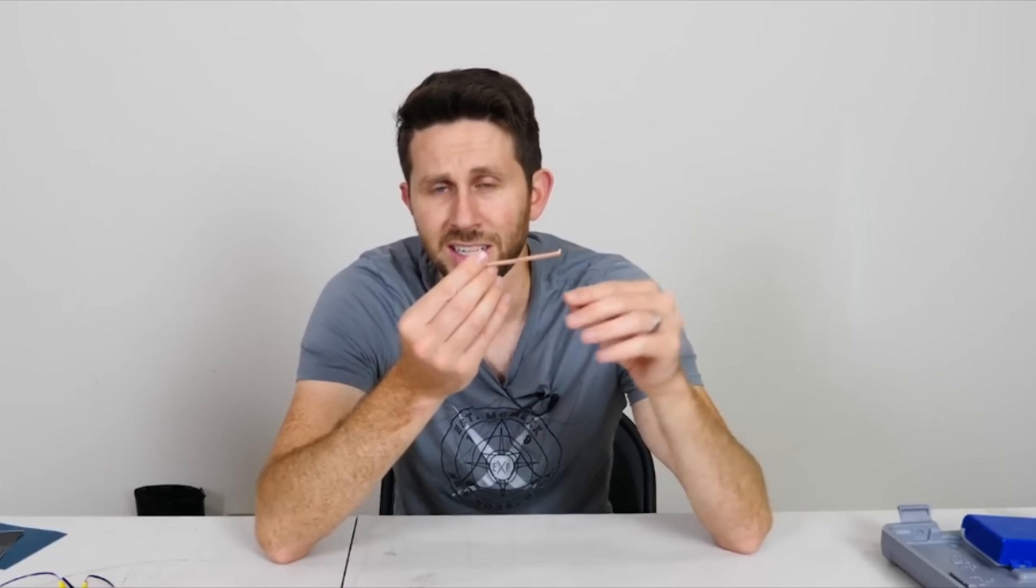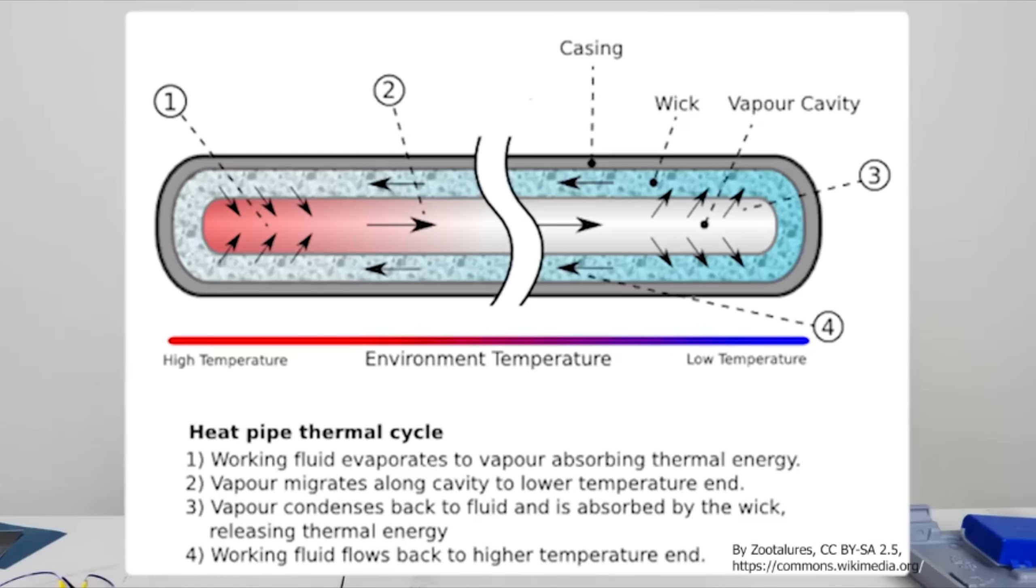And if the other end is colder, then that means that there's a pressure force driving that water vapor to the other side. So high pressure over here, low pressure over here. And so all of that water vapor gets pushed to that side. But now the other side is colder, and so the water vapor now condenses.